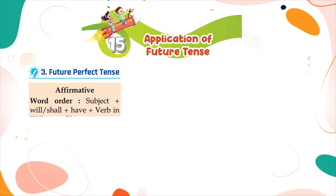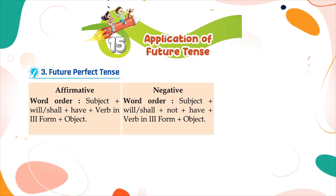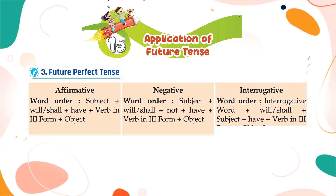Future Perfect Tense. Affirmative word order: subject plus will or shall plus have plus verb in third form plus object. Negative word order: subject plus will or shall plus not plus have plus verb in third form plus object. Interrogative word order: interrogative word plus will or shall plus subject plus have plus verb in third form plus object, question mark.